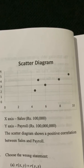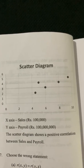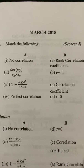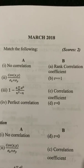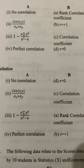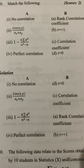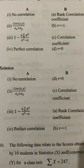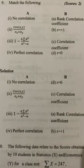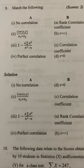We also study the scatter diagram and scatter plot, arranging values along the axes. The next question is match the following. R equals 0 corresponds to no correlation; the rank correlation formula is 1 minus 6 sigma d-squared by n-cubed minus n; and R equals 1 corresponds to perfect positive correlation.